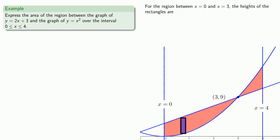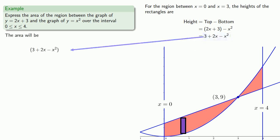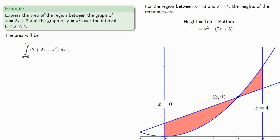For the region between x equals 0 and x equals 3, the heights of the rectangles are top minus bottom, where the top is the line y equals 2x plus 3 and the bottom is y equals x squared. We sum those areas from x equals 0 to x equals 3. For the region between x equals 3 and x equals 4, the top and bottom switch: the top curve is y equals x squared and the bottom is y equals 2x plus 3. The area of the representative rectangle is that height times dx, and we sum those rectangles from x equals 3 to x equals 4.